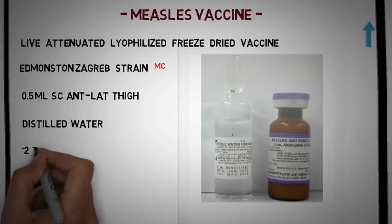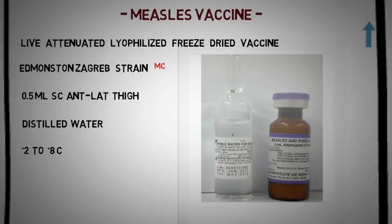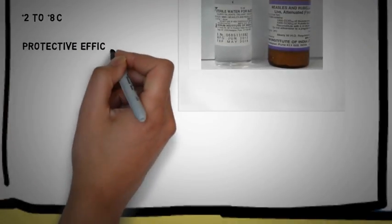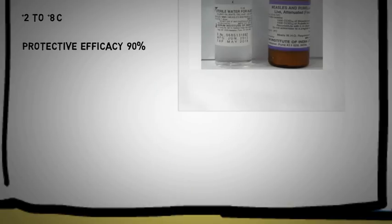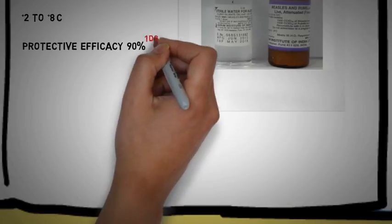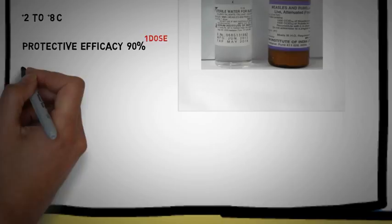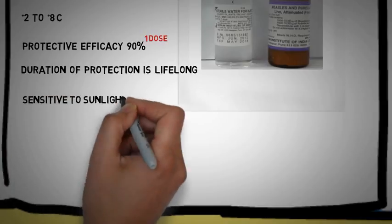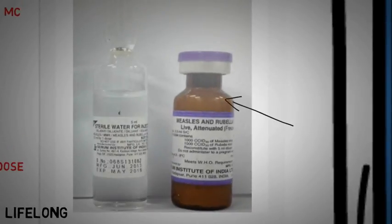The vaccine is to be stored at 2 to 8 degrees Celsius. The measles vaccine is remarkable since it not only gives a protective efficacy of 90% but also provides lifelong protection — all with just one dose. However, it is susceptible to light and must be stored in dark-colored vials.